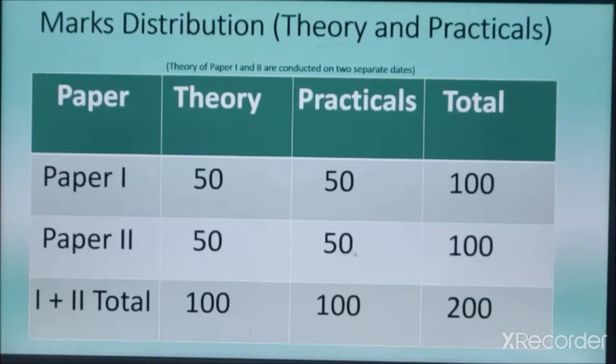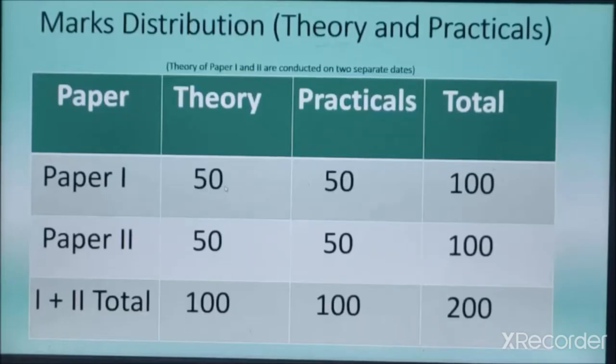In this way, if we combine paper first and paper second, the total theory marks are 100 and total practical marks are also 100. This is internal marks. Including the theory and practical, the total marks are 200. So these 200 marks are very important for you.